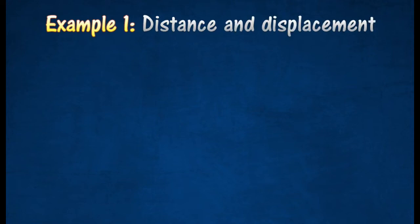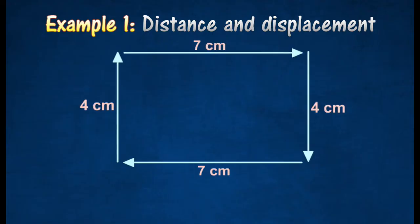For more understanding about distance and displacement, consider the following motion. A man walks 7 meters to the east, 4 meters south, 7 meters west, and finally 4 meters north.